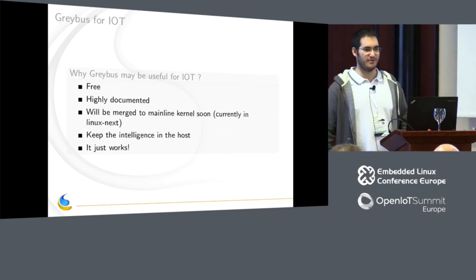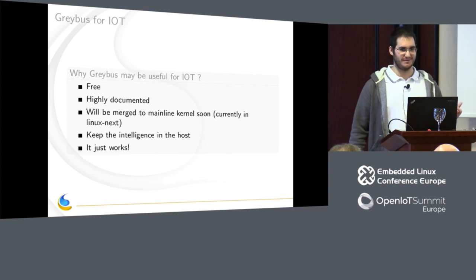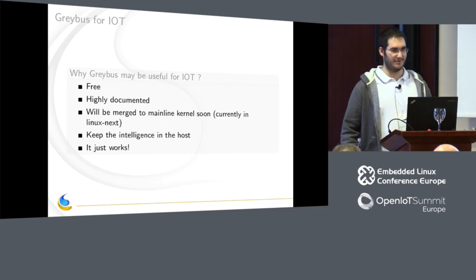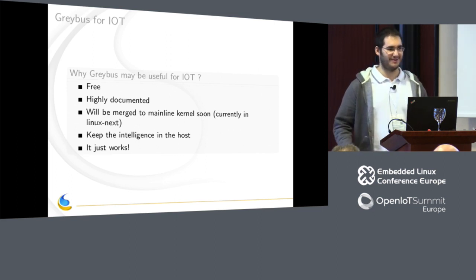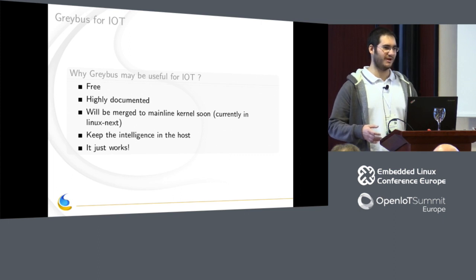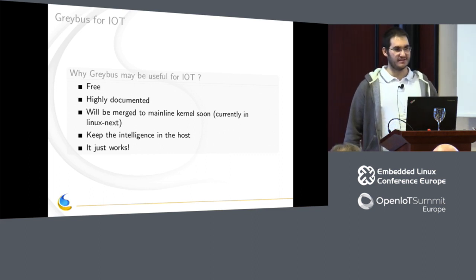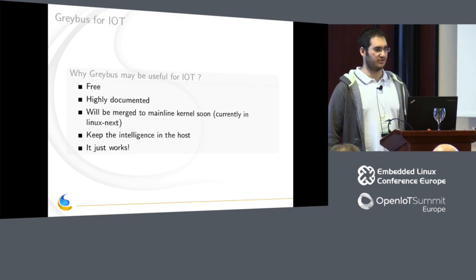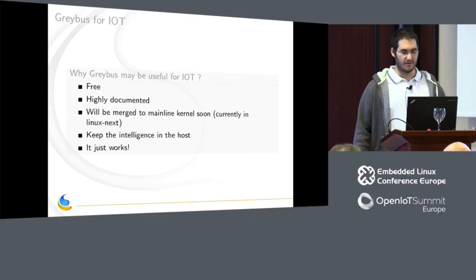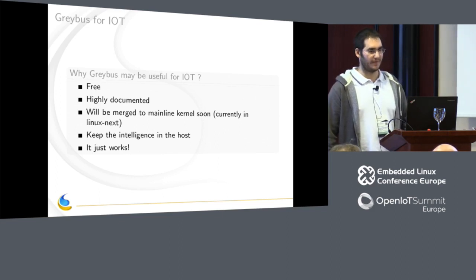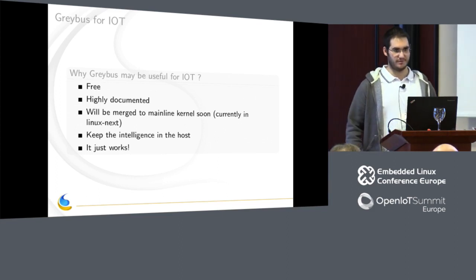So why may Greybus be useful for IoT? First, because it's free — everything is open source and free to use. Even because the project died, there is no longer Google trying to control it, so it's only owned by the community. It's also well documented with a good specification, because the goal was to create a standard. Everything is highly documented and you can start right away. And now it's merged into the kernel — it's in staging — so you can use it now.